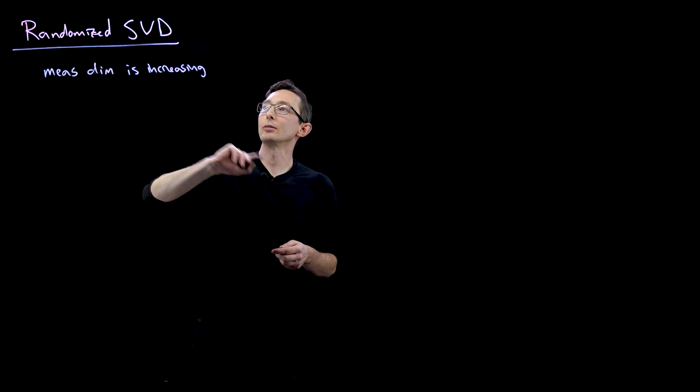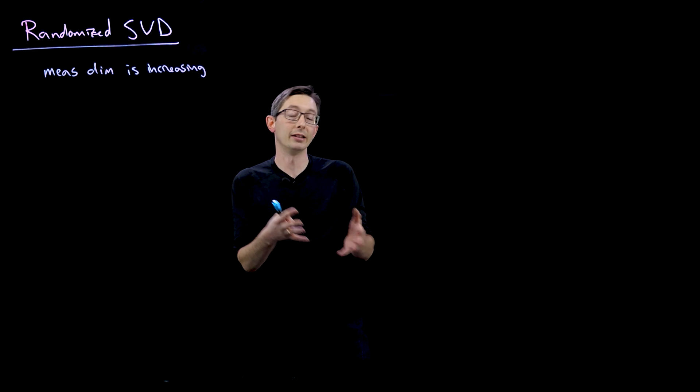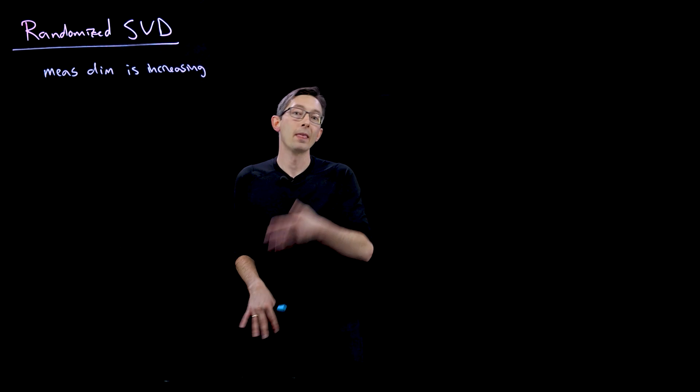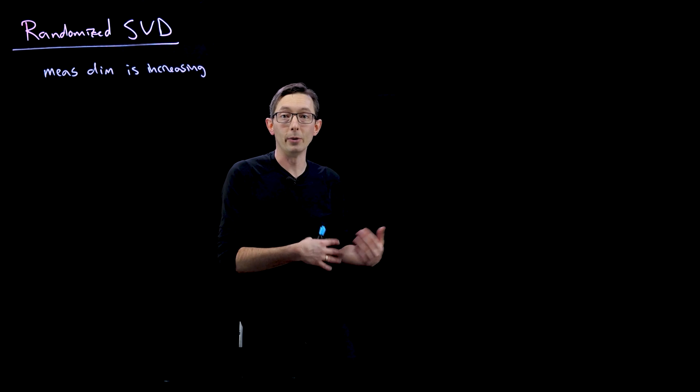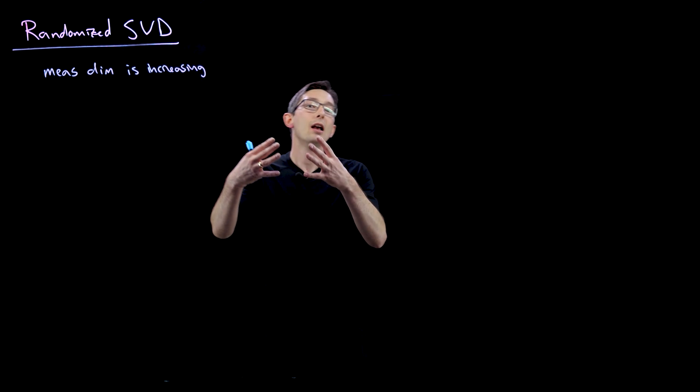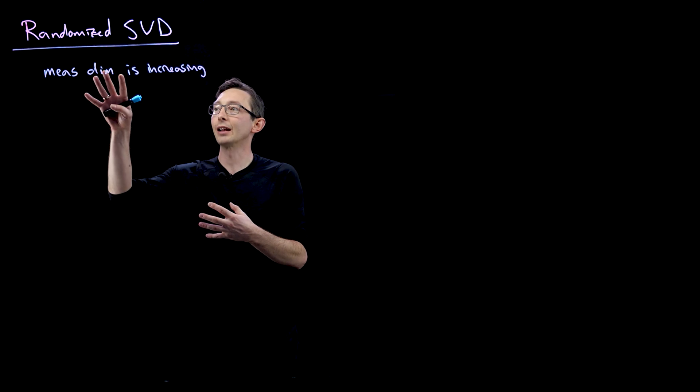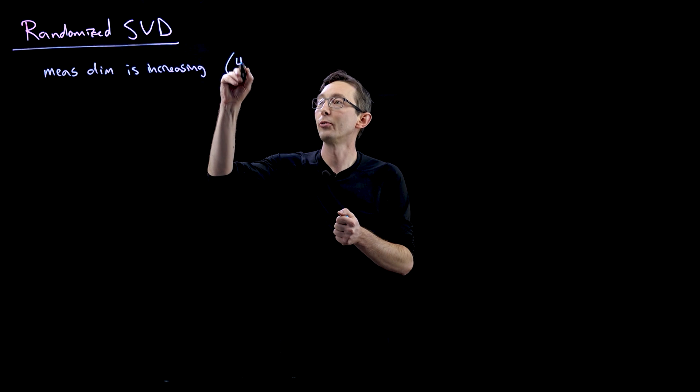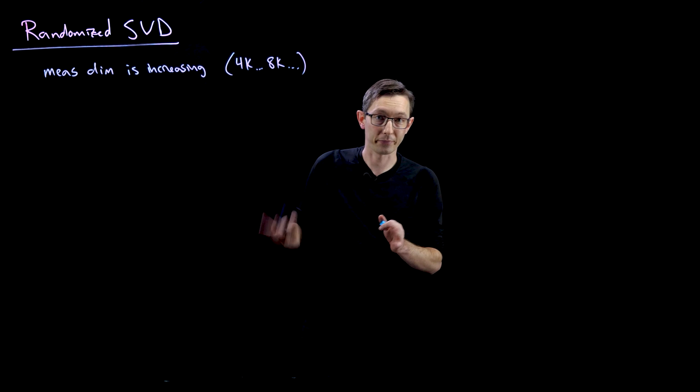For example, just think about your phone. Your phone has more megapixels now than it did last year, than it did the year before, and the year before, and the year before. This video is being shot in 4K, whereas a year ago we just had an HD camera. So increasingly sensors are becoming cheaper and cheaper and you're getting higher and higher and higher dimensional measurement data. So think 4K, soon it'll be 8K and so on and so forth.